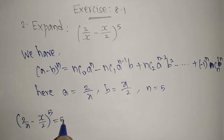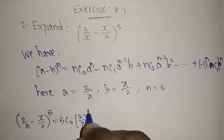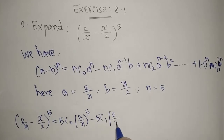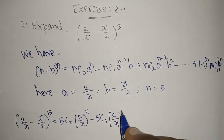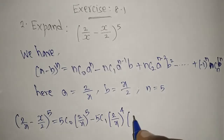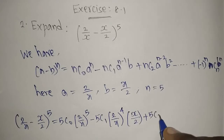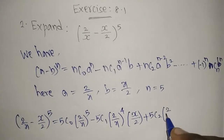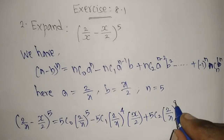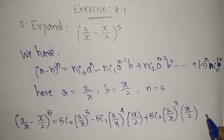Now we substitute: 5C0 * (2/x)^5 - 5C1 * (2/x)^4 * (x/2) + 5C2 * (2/x)^3 * (x/2)^2.